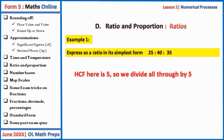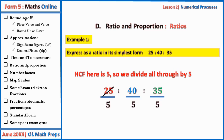We begin by looking at the concepts of ratios using examples. Express as a ratio in its simplest form: 25 to 40 to 35. Note that five is the highest common factor, so we divide all through by five. Dividing: five into 25 is five times, into 40 is eight times, and into 35 is seven times. This ratio in its simplest form is therefore 5:8:7.